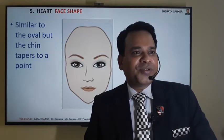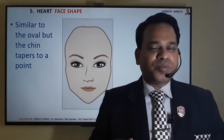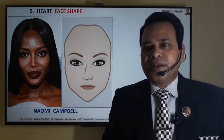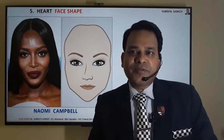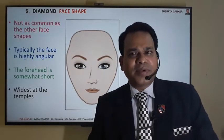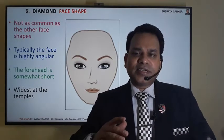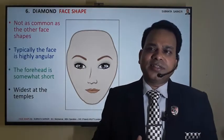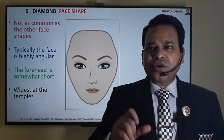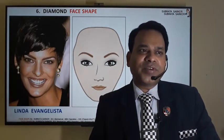The fifth is a heart-shaped face — similar to oval, but the chin is pointed. The example is Naomi Campbell, the African supermodel. The sixth type is very rarely seen. This is the diamond-shaped face — there are a lot of angles and the forehead is very short. Another supermodel, Linda, has got this diamond face shape.